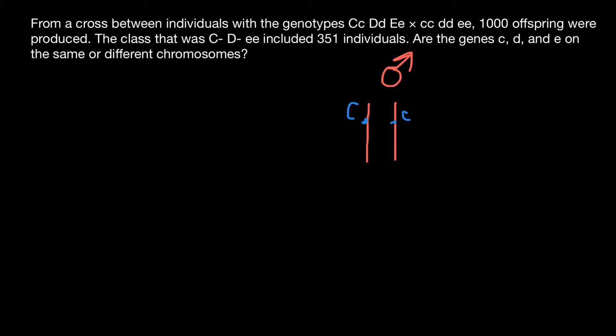We also have another individual — female. She also has, on the same homologous chromosomes, two alleles at the same locus: a recessive allele C on one chromosome and also a recessive allele C on the other chromosome.